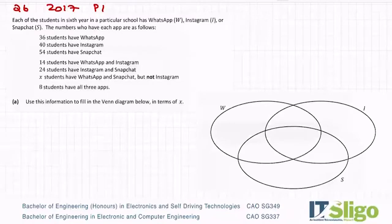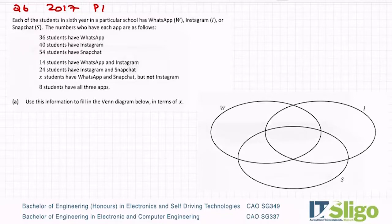Question six on sets from the 2017 Paper 1. Each of the students in sixth year in a particular school has WhatsApp, Instagram or Snapchat. The numbers who have each app are as follows: 36 have WhatsApp, 40 have Instagram, 54 have Snapchat. 14 students have WhatsApp and Instagram, 24 have Instagram and Snapchat, X students have WhatsApp and Snapchat but not Instagram, and 8 have all three.